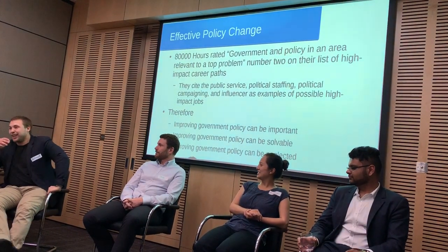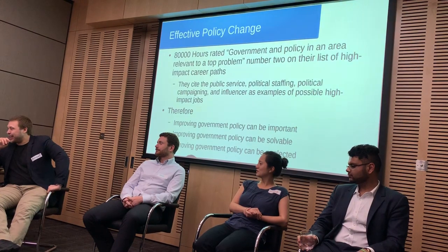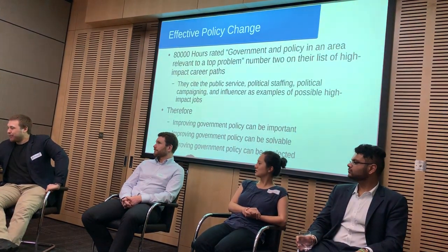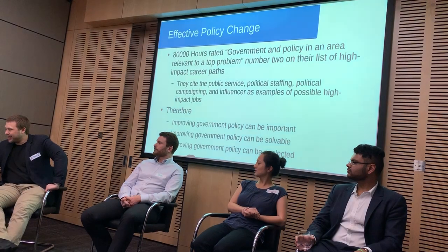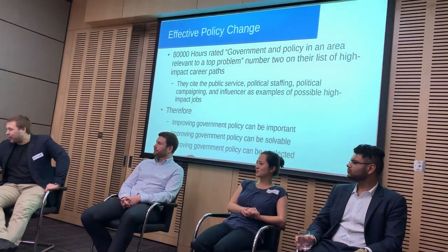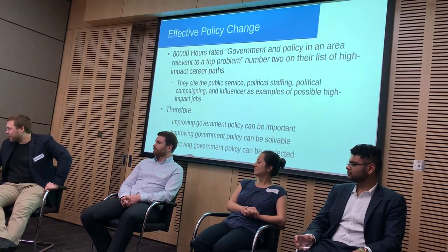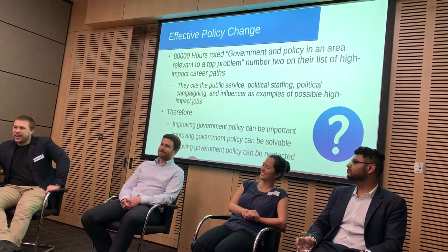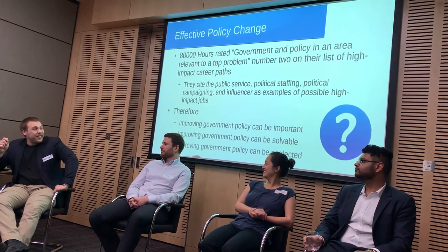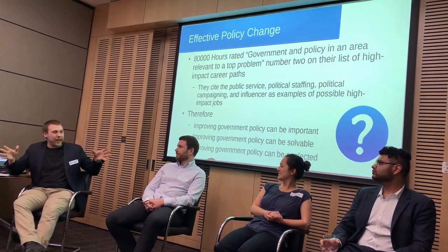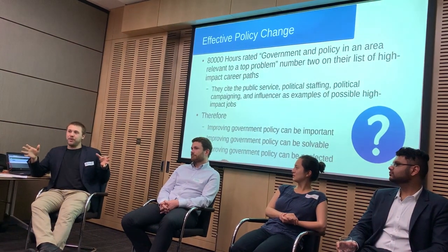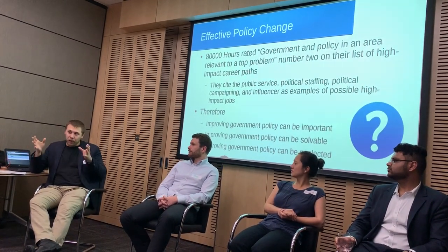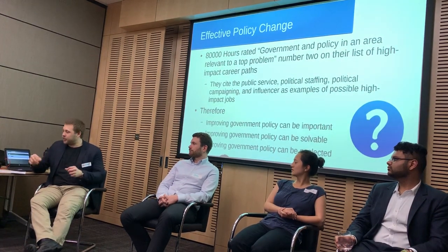We can conclude, from the fact that 80,000 Hours stated this as an important cause area, that improving government policy can be important, it can be solvable, and it can be neglected. Or can it? Hopefully these are the questions we'll answer tonight — whether or not approaching change through policy can actually improve the world in a maximal way, and if it can, what's the best method of achieving that change?